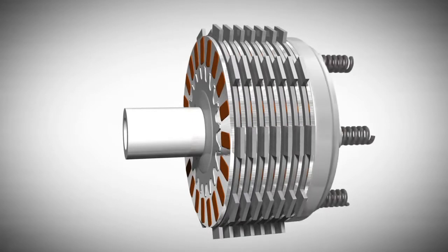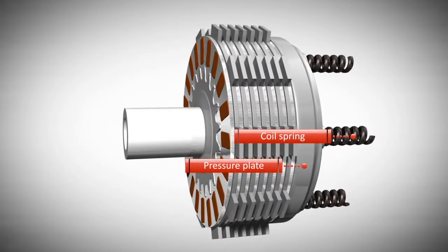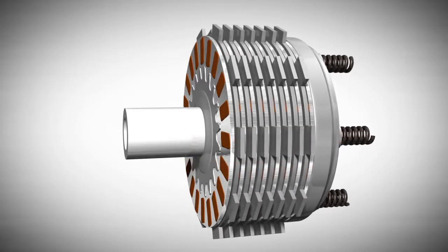Usually the disks are engaged by pressure through a set of four coil springs. These apply pressure on a pressure plate that consequently applies pressure to the clutch pack.